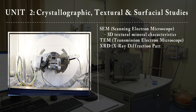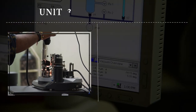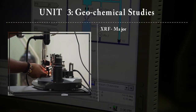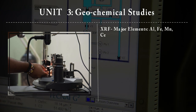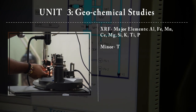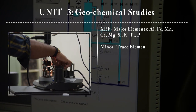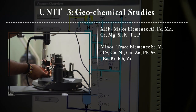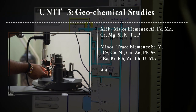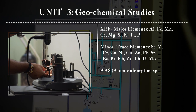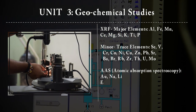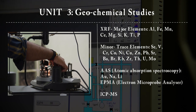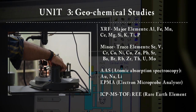Unit 3 will deal with various types of geochemical studies with the help of XRF for identifying major elements and minor or trace elements. We will also deal with atomic absorption spectroscopy and electron microprobe analyzer, and ICP-MS for identifying rare earth elements.